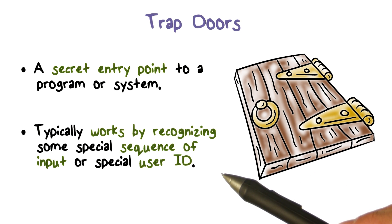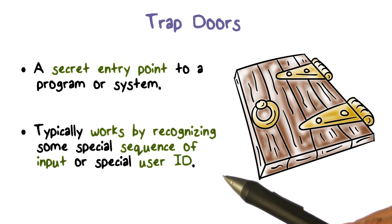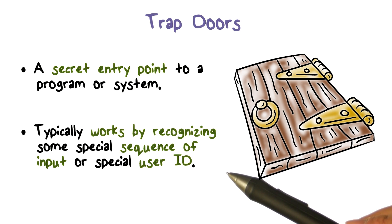A famous but naive version of a trapdoor, sometimes called an Easter egg, is the flight simulator in the 1997 version of the Microsoft Excel program. The user, when entering an undocumented series of commands, can gain access to a flight simulator program embedded within Microsoft Excel.